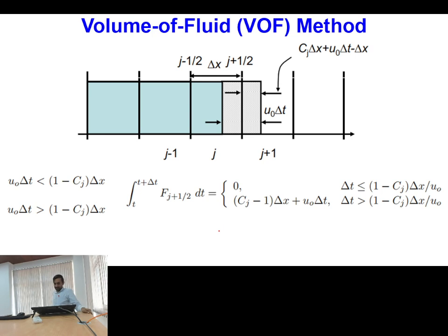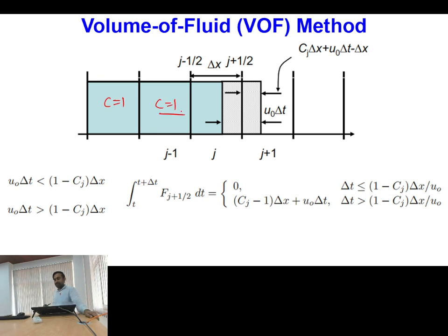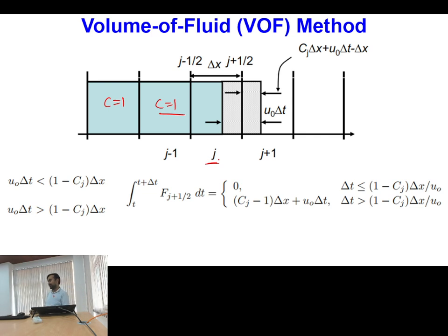Now we will talk about the third type of interface advection scheme, which is called the volume of fluid method. In the volume of fluid method, the shaded portion is the color function equal to 1. When I specify the color function in a cell containing the interface — say the jth cell is containing the interface — I have specified the color function as a shaded portion.